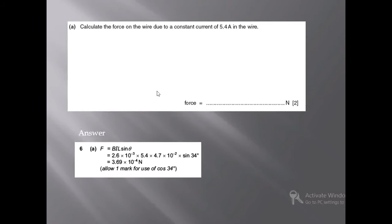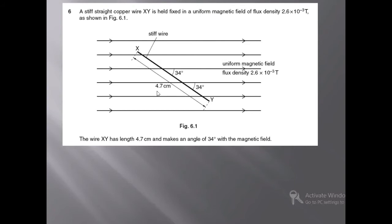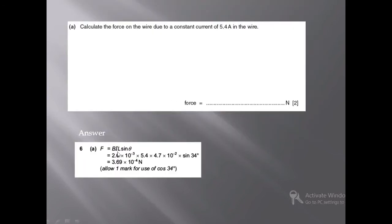Students, in order to calculate the force on the wire you need to use the formula F = BIL sinθ. This formula is used because this is a current-carrying conductor placed in a magnetic field, and when a current-carrying conductor is placed in an external magnetic field, a magnetic force is generated, which can be calculated using F = BIL sinθ.